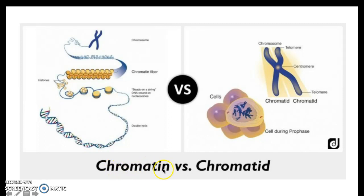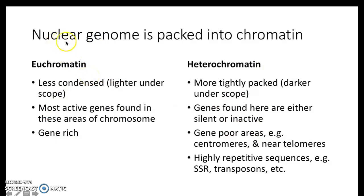These condensed chromatids form a chromosome. Chromatin is the structure of DNA — this is tightly coiled, supercoiled DNA wrapped around histone proteins, making it unusable for transcription. Nuclear genomes are packed into two forms of chromatin: heterochromatin and euchromatin. The one we're most interested in is euchromatin — the gene-rich region where most active genes are found. This is the part we're going to spend time studying.